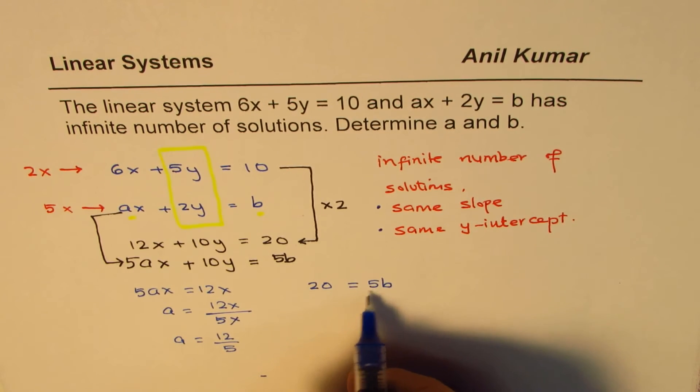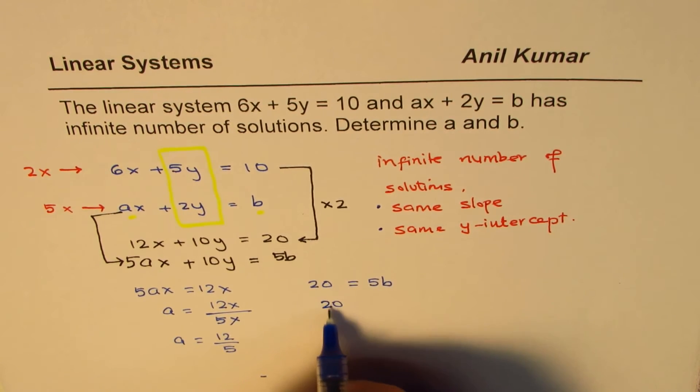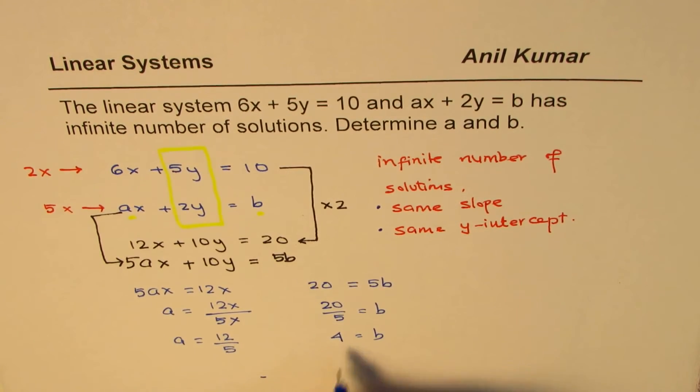And here, we can divide by 5, so we get 20 over 5 equals b, or b equals 4.